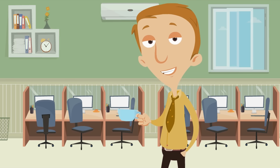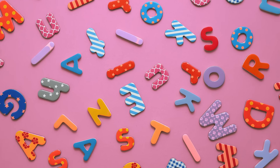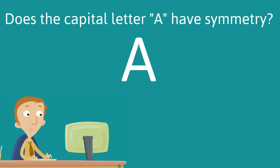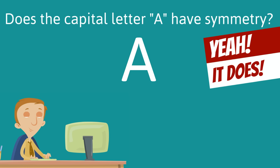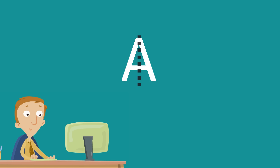Let's check out some letters and see which ones have symmetry. We can try the first letter, the letter A. Does the capital letter A have symmetry? Yeah, it does. The capital letter A has one vertical line of symmetry, right here. How do we know that's a line of symmetry? Well, we look at both sides.